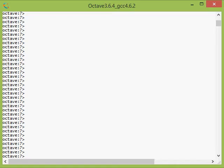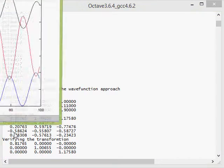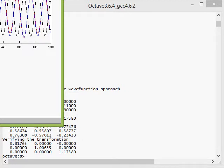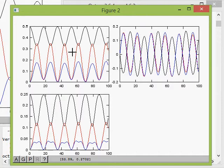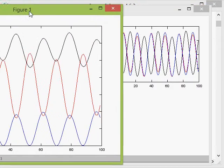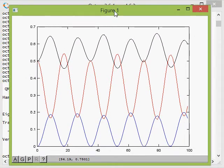Now if I open octave and type liuvel von neumann equation underscore n underscore level. The script runs, shows me its output and its two figures. Figure 2 shows the coherences. Figure 1 shows the population.